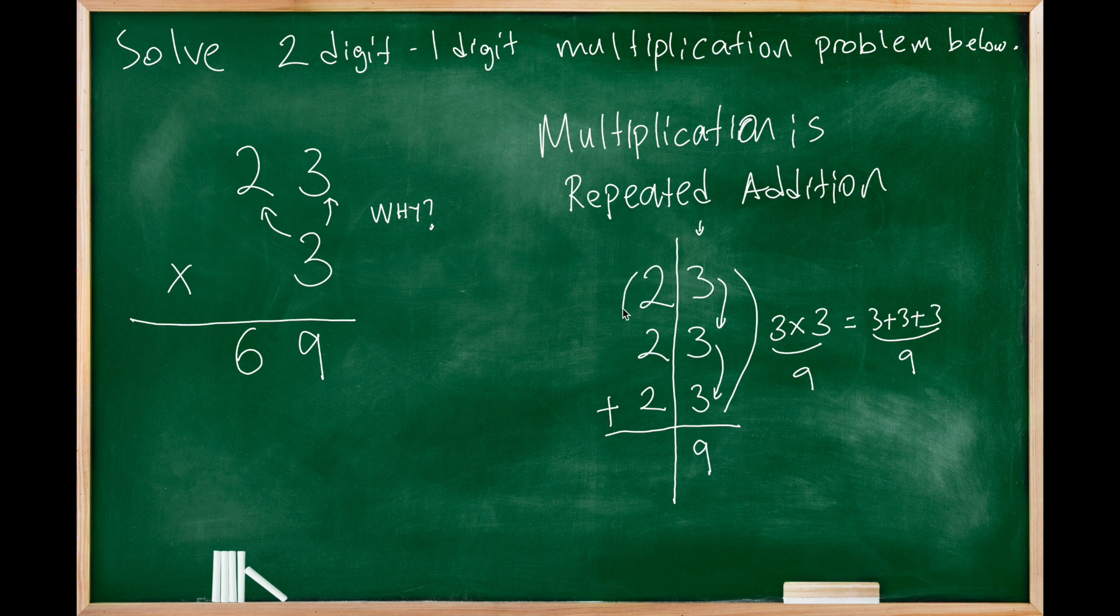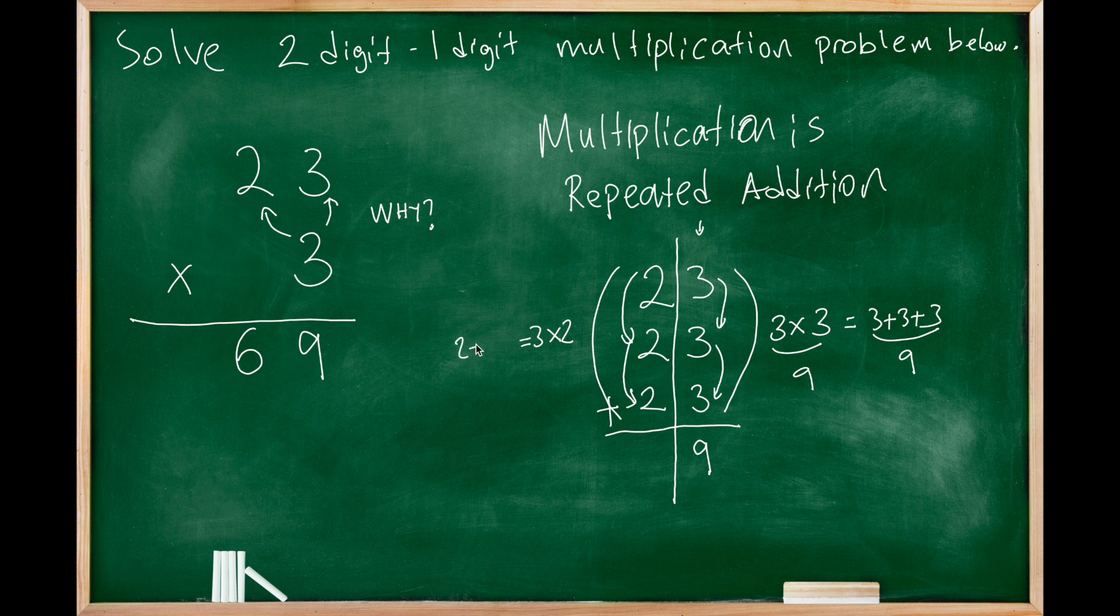So we have 2+2+2. This is also three groups of two, which is the same thing as 2+2+2. It makes both sides the same thing. It makes six.